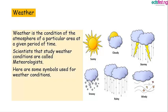Later in the afternoon, the rain may stop and the sun starts to shine. So, the weather condition of your school as at that afternoon is no longer raining, but rather sunny. That is why weather is defined as the condition of the atmosphere of a particular area at a given period of time.